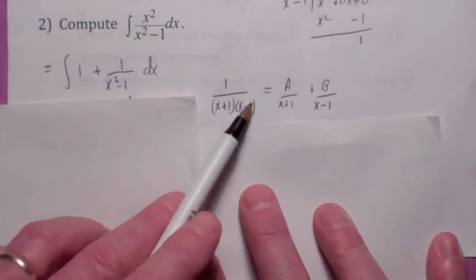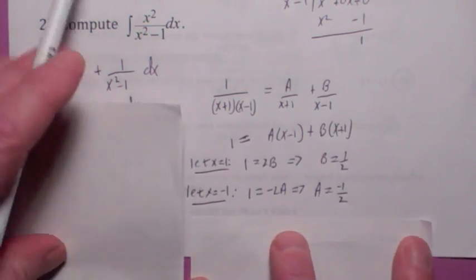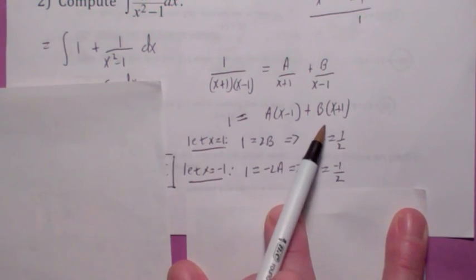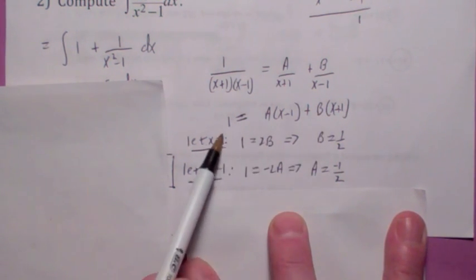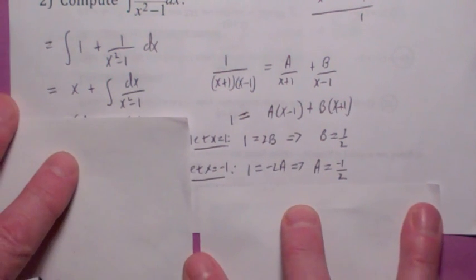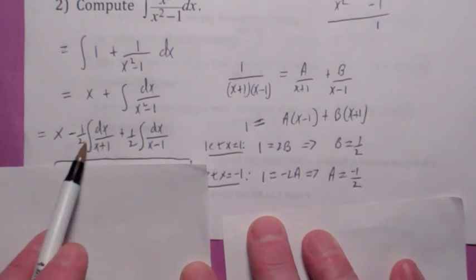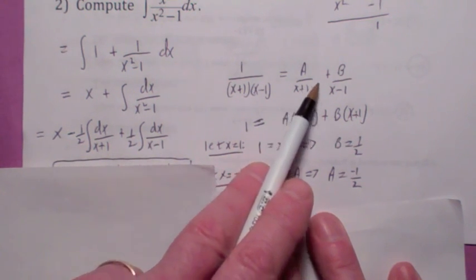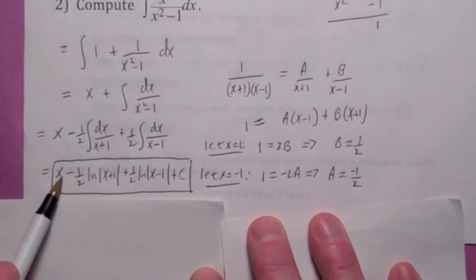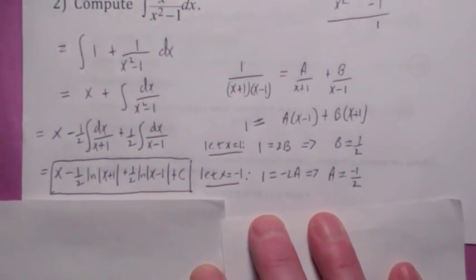Factor the denominator and write it as a over the first factor plus b over the second factor. Clear the fractions. Pick x equal 1 — this drops out — and you get 2b equals 1, so b is 1 half. Pick x equal negative 1 — this drops out — and negative 2a equals 1, so a is negative 1 half. The integral becomes x minus 1 half times ln absolute value x plus 1 plus 1 half times ln absolute value x minus 1, plus c.